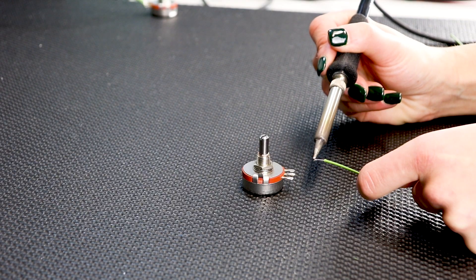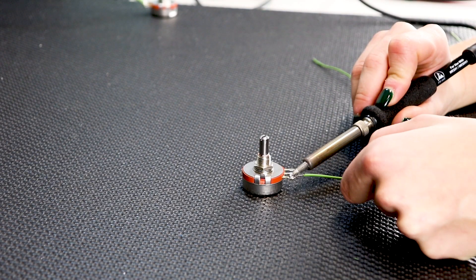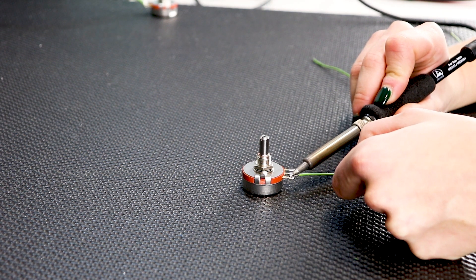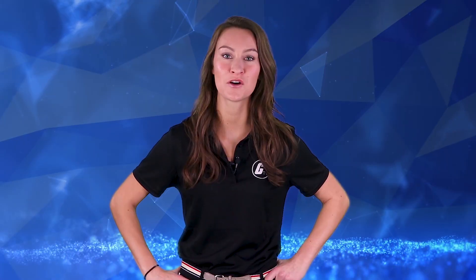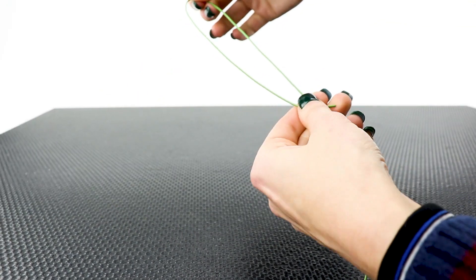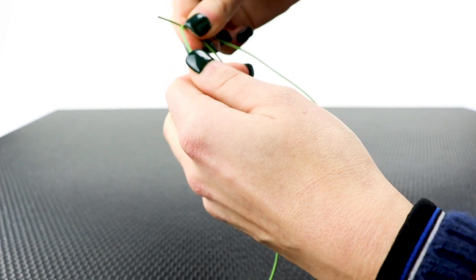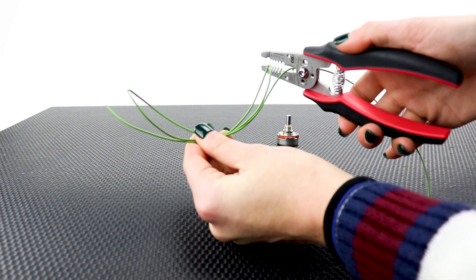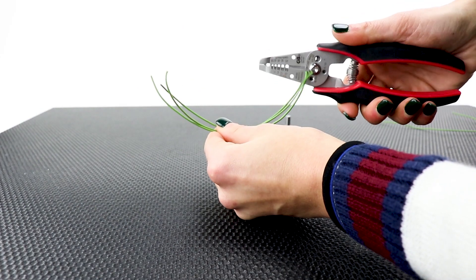Measure the length of wire you will need to connect the terminal to a convenient location on the chassis and use a pair of wire snips to cut the wire to length.